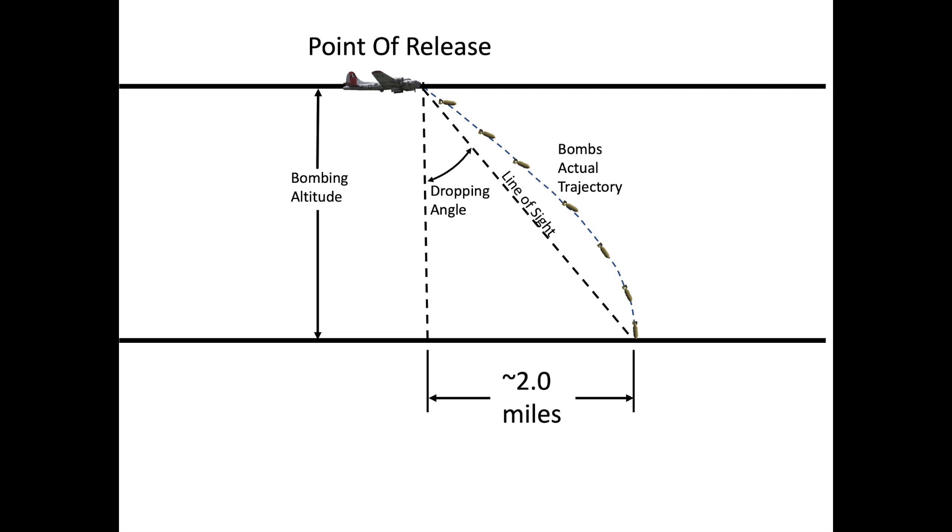Bomb freefall parabolic ballistics are best explained by reviewing a bomb's changing horizontal speed, vertical speed, and rotational orientation. Bombs are designed to freefall with predictable, repeatable ballistics.